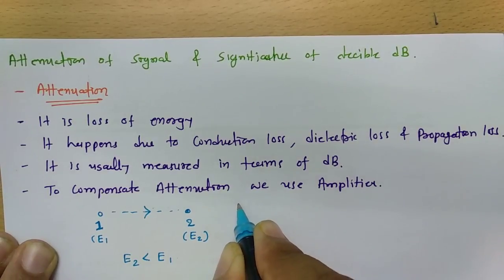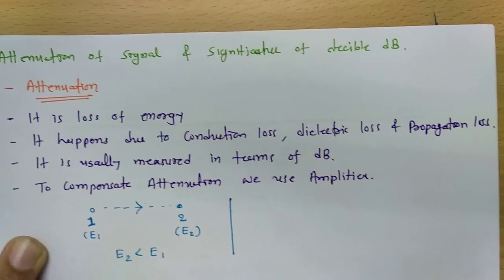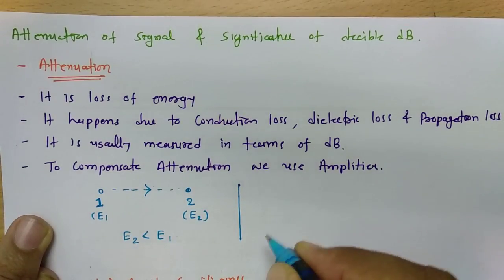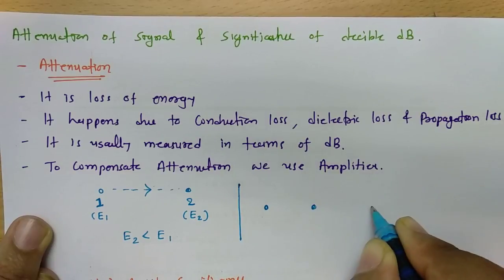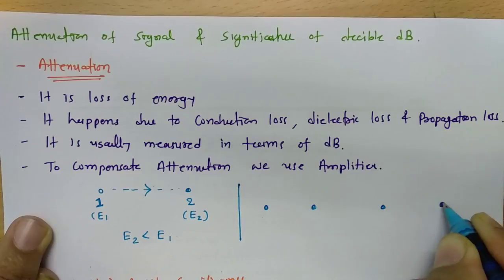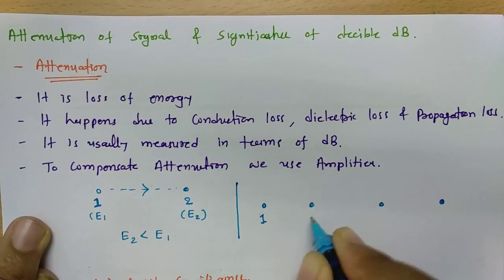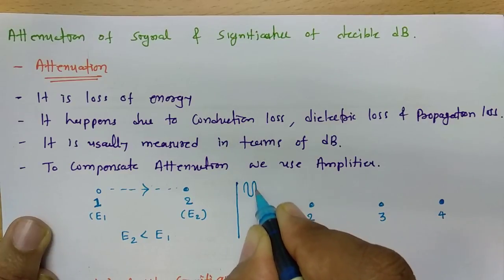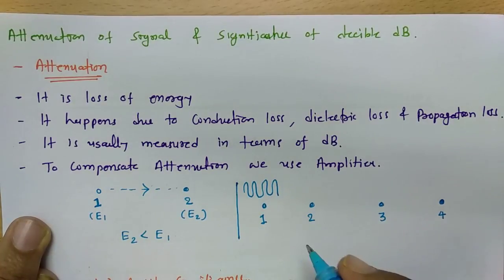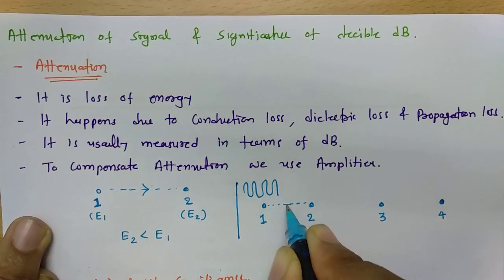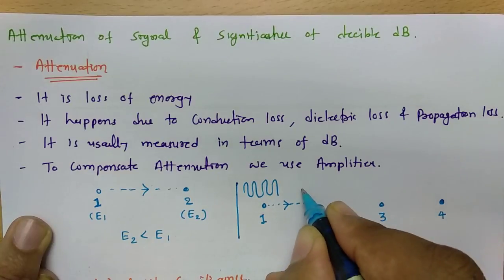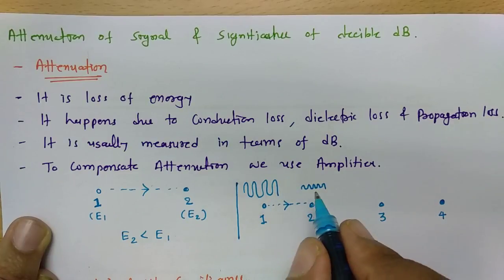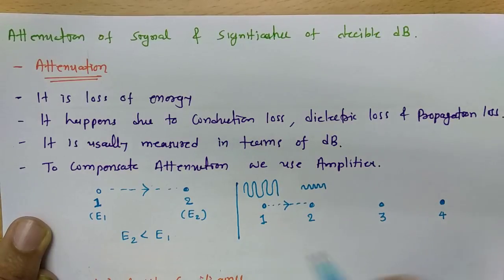If we look at how this happens with respect to the signal, because of attenuation the shape of the signal will not change. Consider four measurement points: point 1, point 2, point 3, and point 4. If the signal appears a certain way at point 1, as it propagates through the medium the signal will get weak. Its shape will be the same, frequency will be the same, phase will be the same — but the magnitude of the signal will decrease because of attenuation.